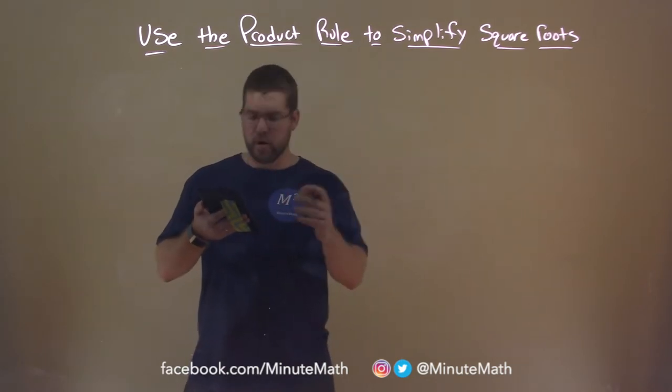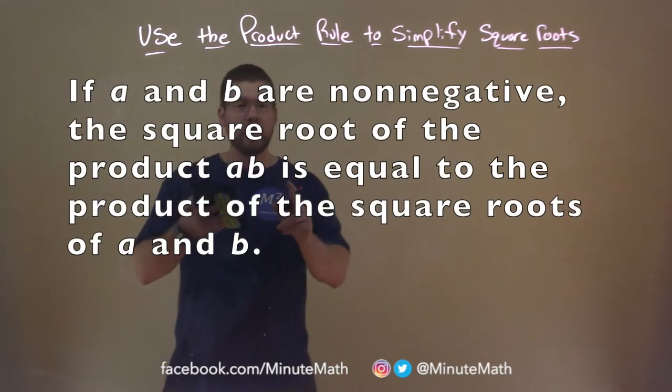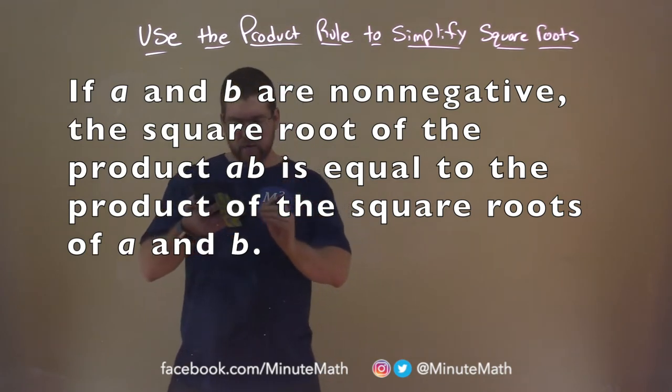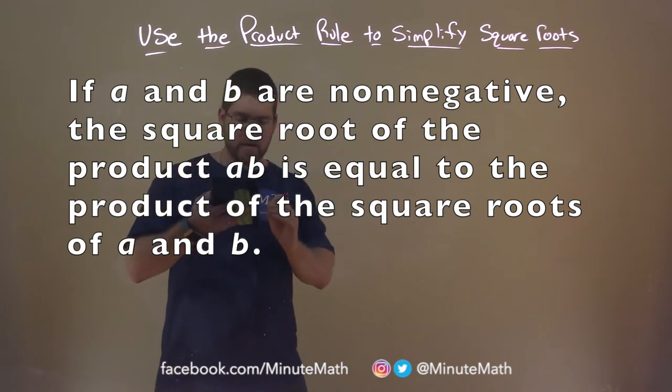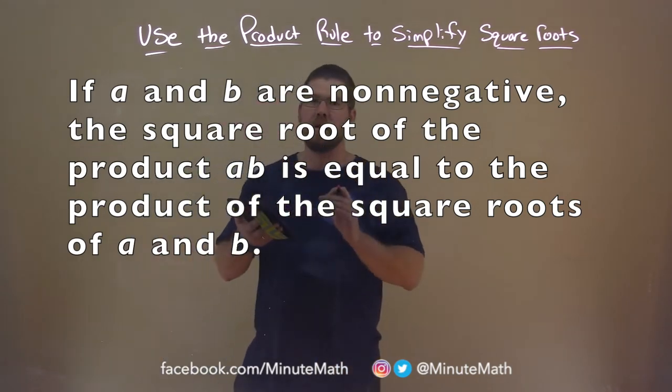Well, let's state it in a nutshell. The product rule for simplifying square roots: If A and B are non-negative, the square root of the product AB is equal to the product of the square roots of A and B.